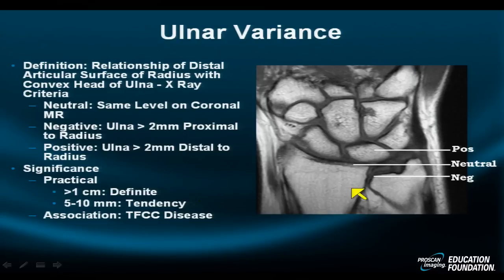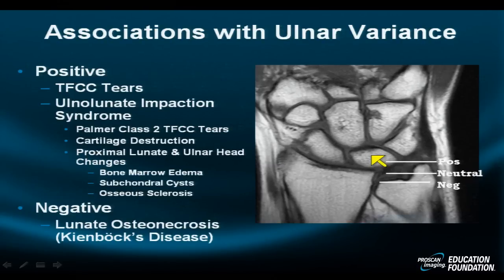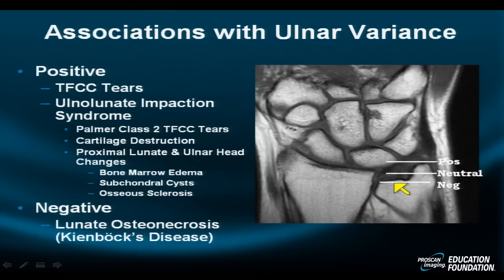Extreme negative or extreme positive ulnar variance is associated with certain disease states, one of which is triangular fibrocartilage complex disease. When we look at positive variance — where the ulna is protruding distal to the radius — the patient is at risk for ulno-lunate impaction syndrome.